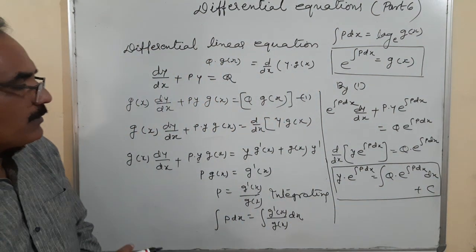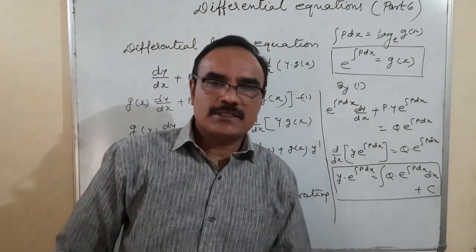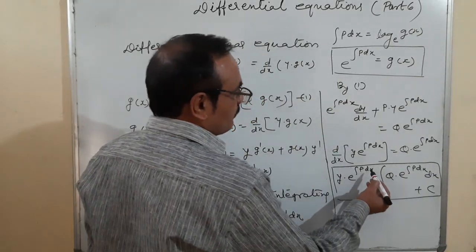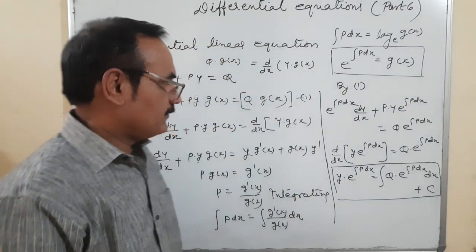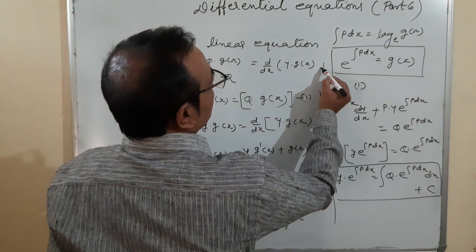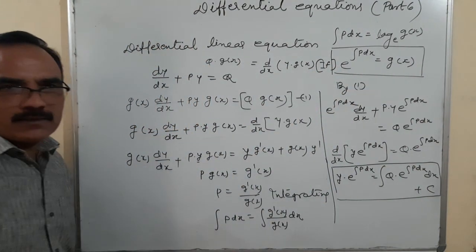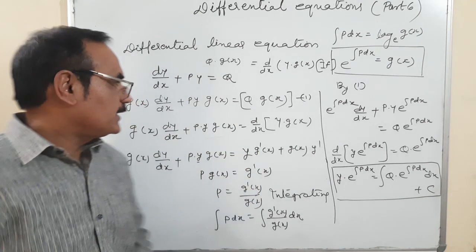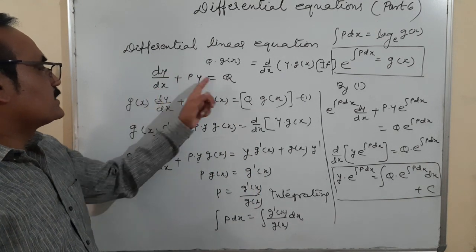So the formula is: y·e^(∫P dx) = ∫Q·e^(∫P dx) dx + C, where e^(∫P dx) is the integrating factor, known as IF. This is the derivation of the formula for the linear differential equation.